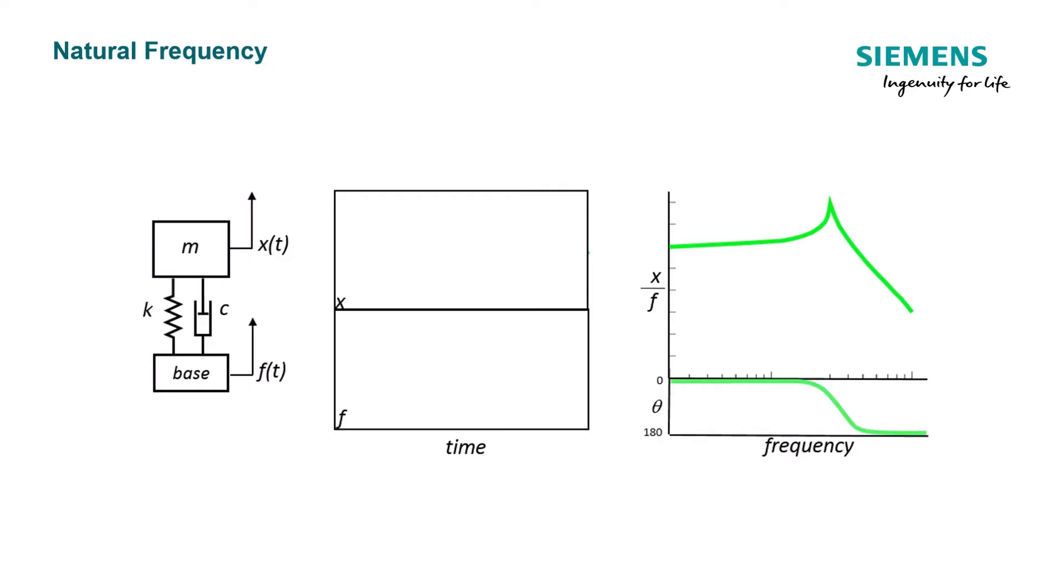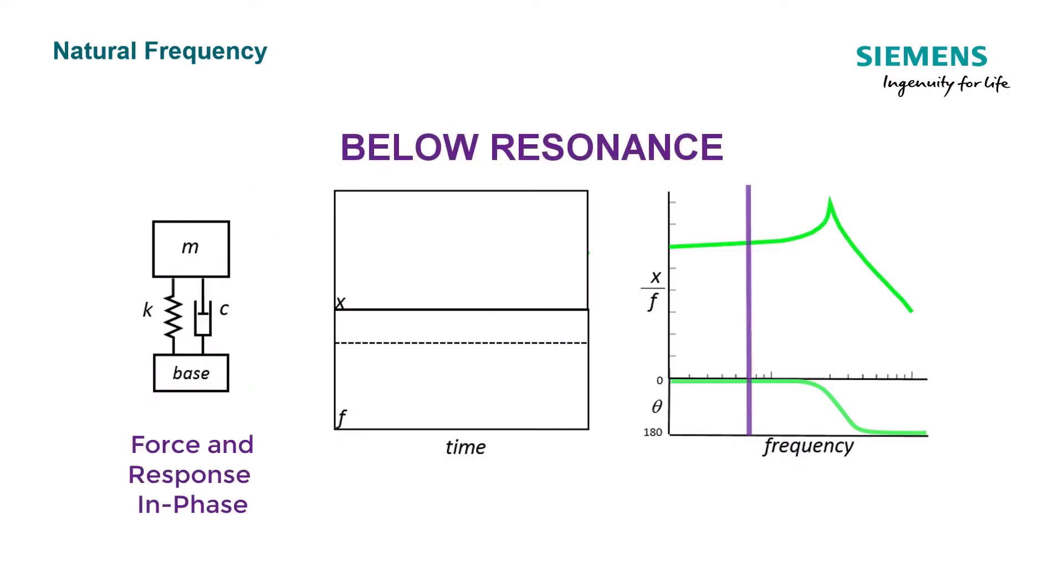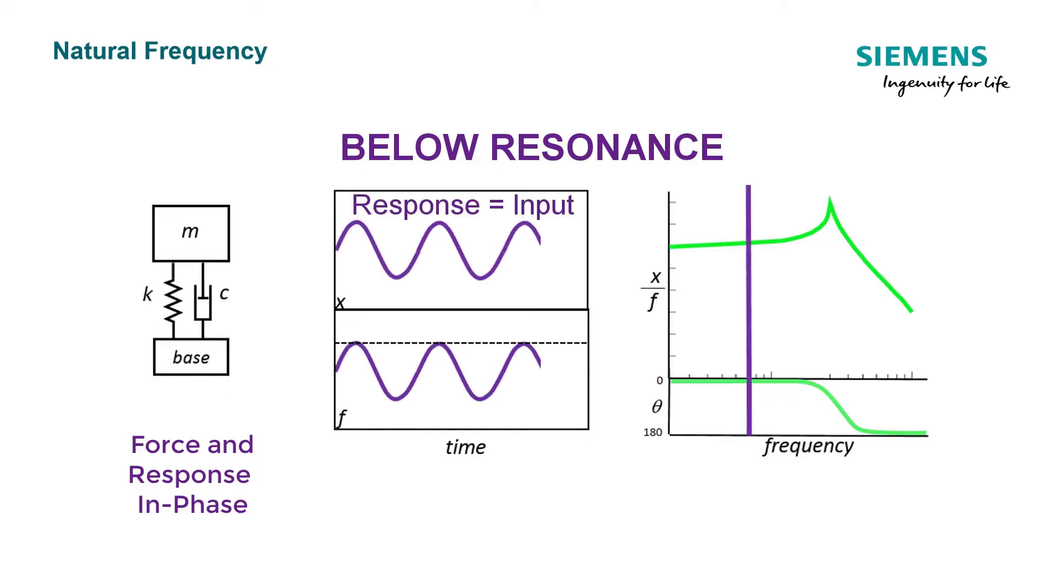If we look at this free body diagram, you can see on the top portion here we have the displacement or the response, and on the bottom we have the input force. We input a constant level force into the system. We can look at the relative motion between the mass and the base at different frequencies. If we're below the resonance, you can see the mass and the base are moving in phase with each other, and the response is equal to the input.